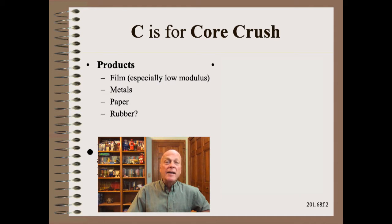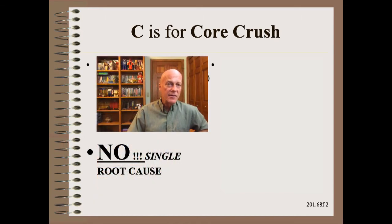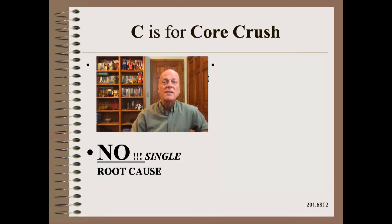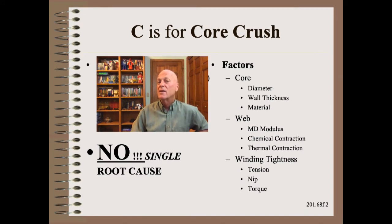Core crush is quite common in low-modulus films and common enough in metals and paper and elsewhere. By now, if you've been following this series, you will know there is no single root cause. Instead, there are two very distinct mechanics that have a half a dozen factors of varying strength. The major factors include the core, the web, and the winder, each of which has several sub-factors. These factors are well known by the long-standing and well-proven science of web handling, winding, and material mechanics.